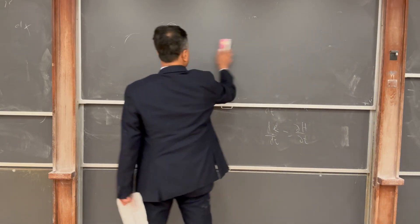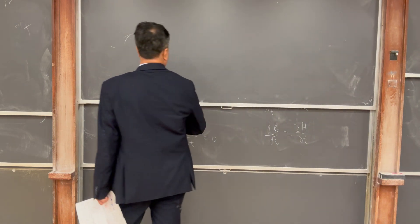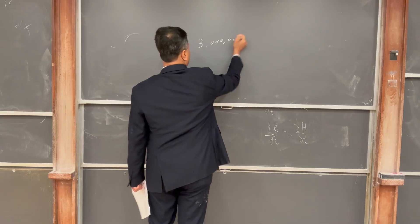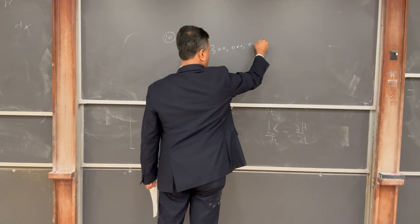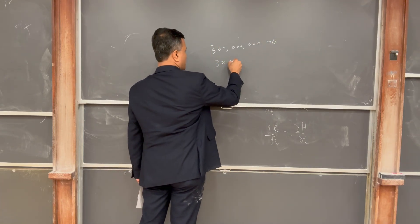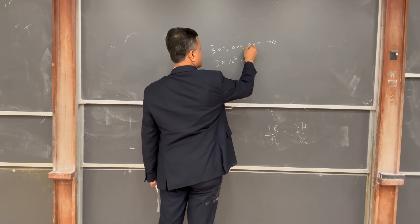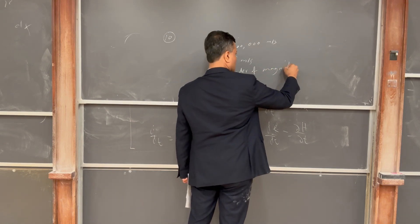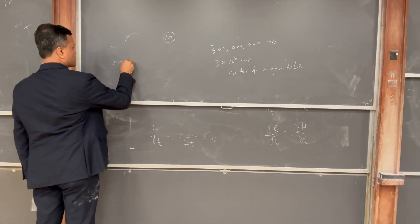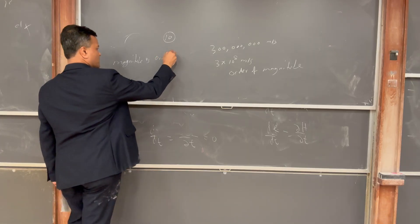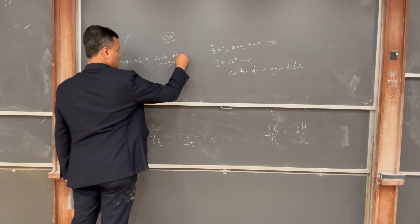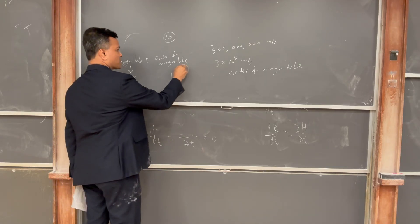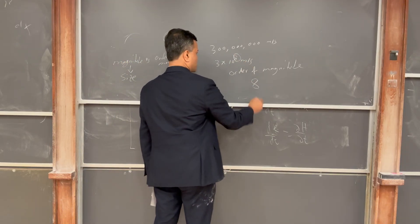Problem ten is super easy. The speed of light is 300,000,000 meters per second, which is 3 × 10⁸ meters per second. I asked for the order of magnitude. Many people ask: what is the difference between magnitude and order of magnitude? Magnitude is the size. Order of magnitude is the power of ten. Since 3 is less than 3.16, the order of magnitude is 8.